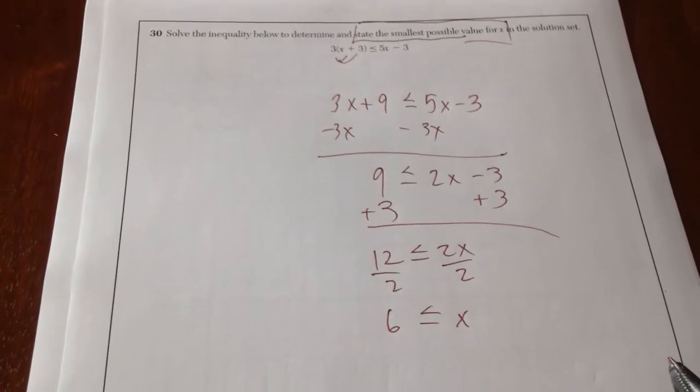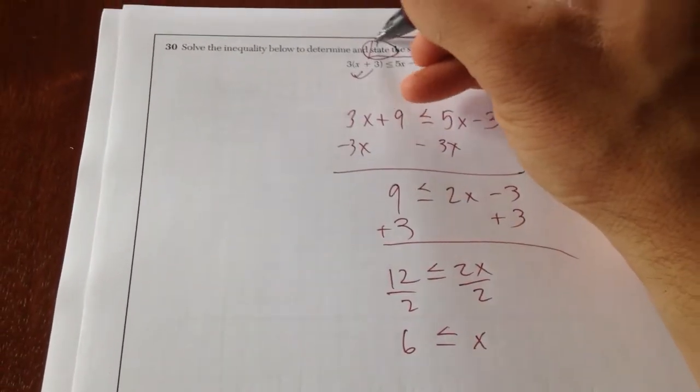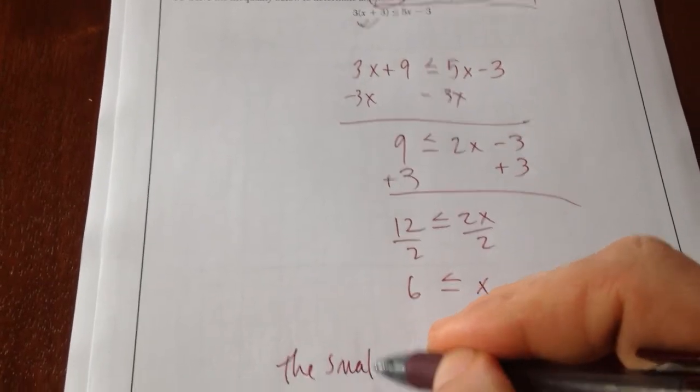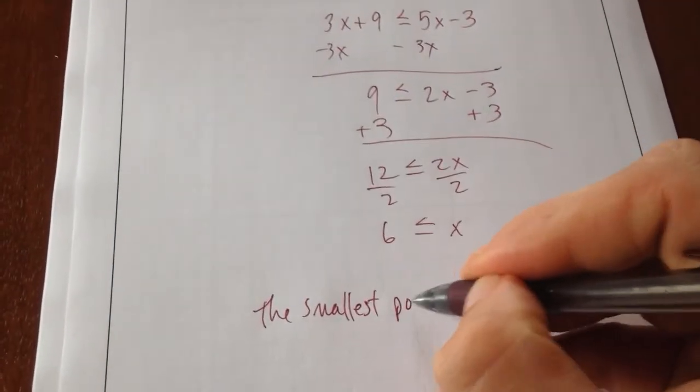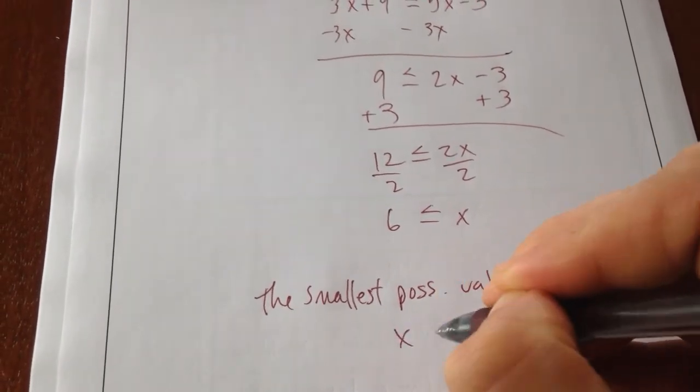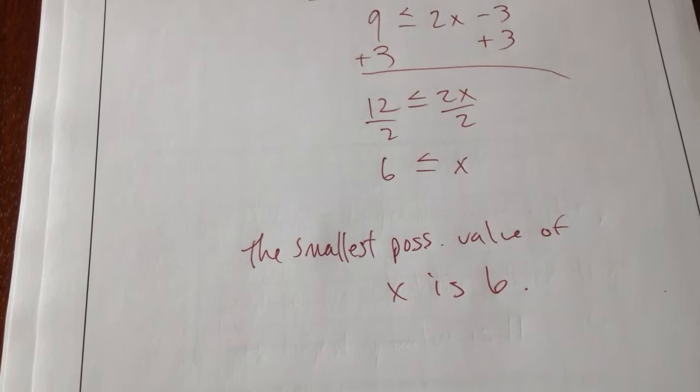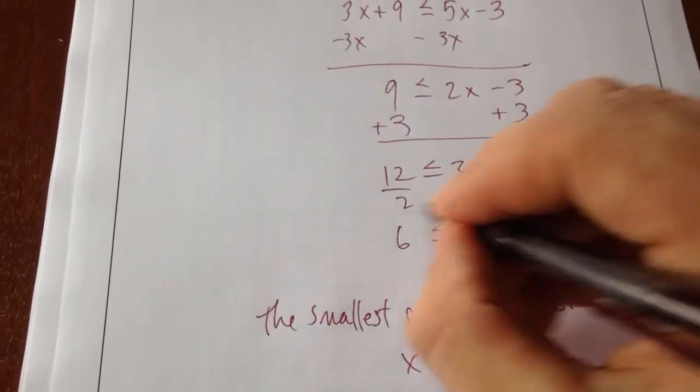Now, if you stop right here, you would lose points because it says to state, so you need to make a statement. The smallest possible value of x is 6. Complete sentence, we know that you understood what this means.